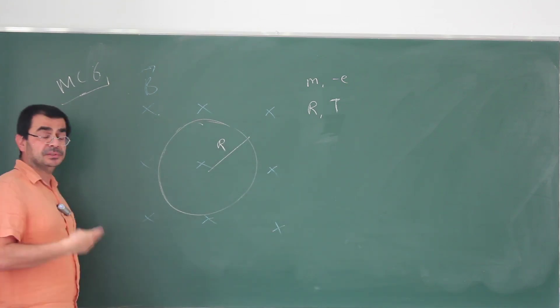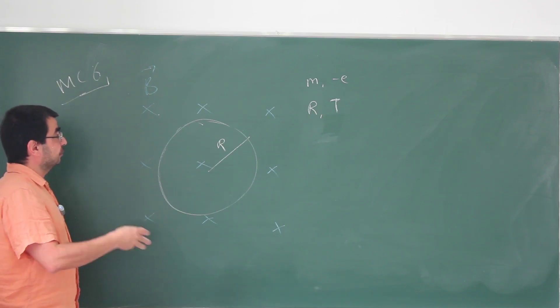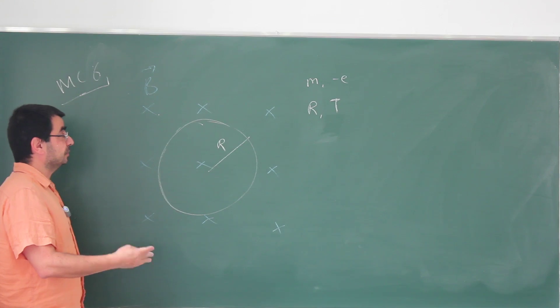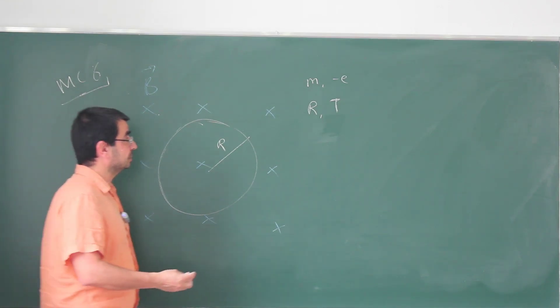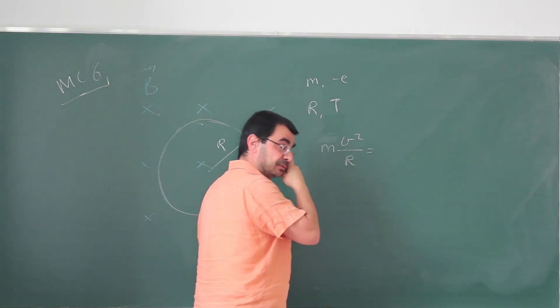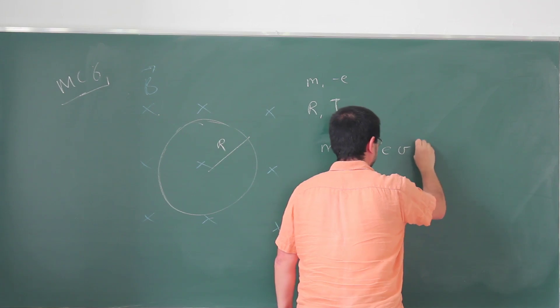In this case, the magnetic field, the magnetic force, is the reason for this motion. This is uniform circular motion. The magnetic force is always perpendicular to velocity, so it's going to lead to uniform circular motion. The centripetal force, Mv squared by R, is the magnetic force, which is E, V, B. This is minus E, but it doesn't matter. We're just looking at the magnitudes here.